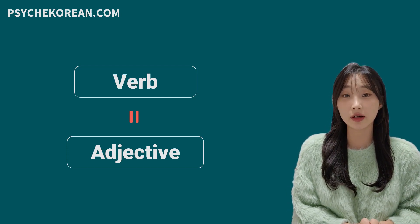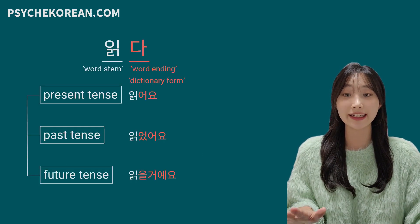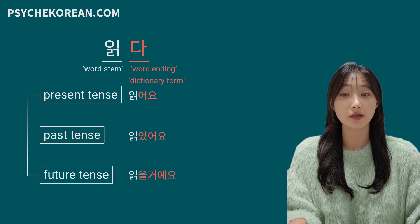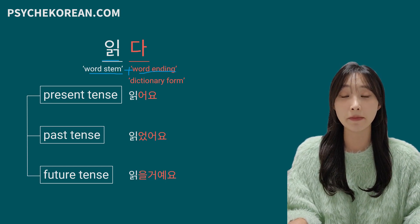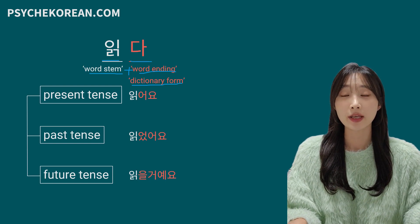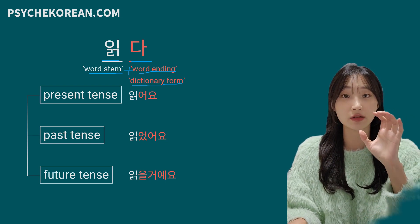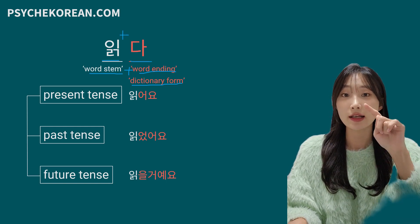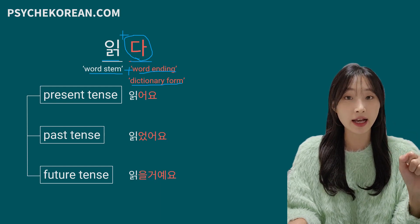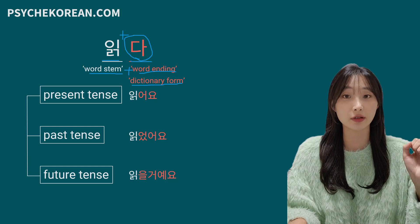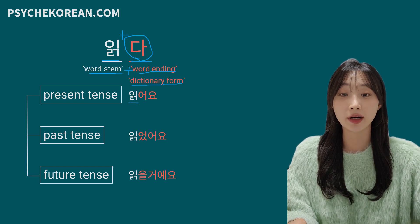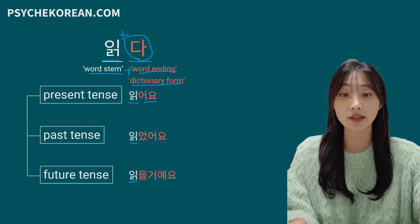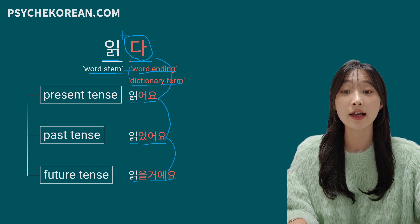So if you learned how to make tense with the verb, it goes the same with the adjective. If you look at the word 읽다, which means 'read,' always the Korean verb consists of a word stem and word ending. Here 읽 is the word stem carrying the core meaning, and 다 is the word ending — also called dictionary form. The word ending 다 doesn't have any meaning; it's conjugated depending on the tense, politeness level, or sentence type. The word stem doesn't change form, but the word ending 다 is conjugated depending on the tense.